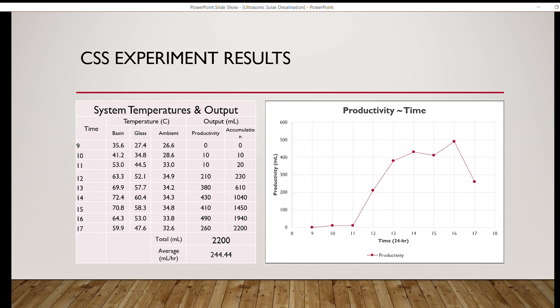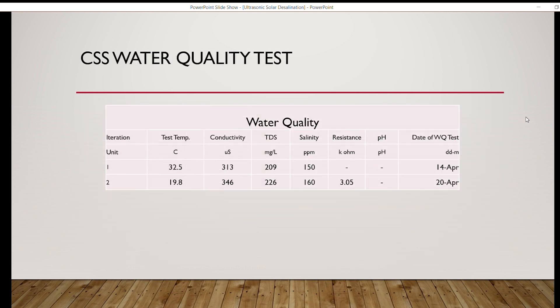The conventional solar still managed to produce 2.2 liters of water at an average of 244.44 milliliters per hour. The water quality test was performed, obtaining the values of the following parameters, such as the pH level, the total dissolved salts, and the salinity.